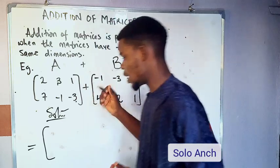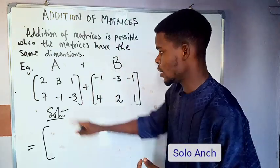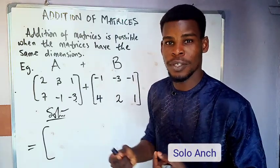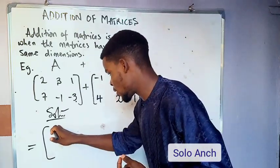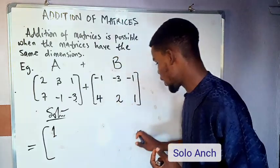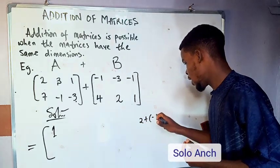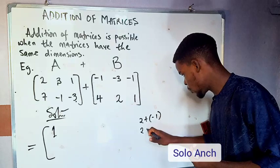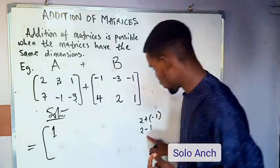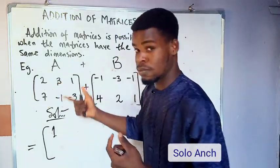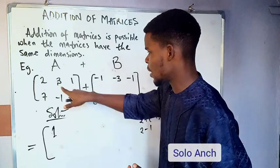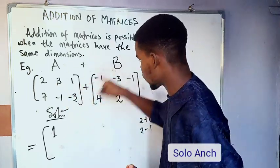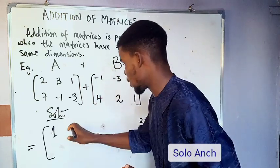Adding the corresponding entries: two plus negative one — since two plus negative one is the same as two minus one — gives positive one. Then three plus negative three is three minus three, which equals zero.